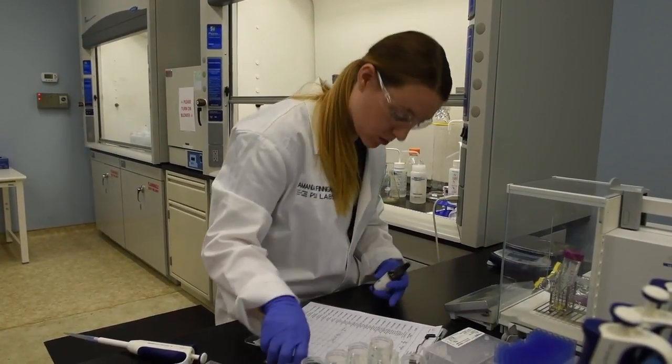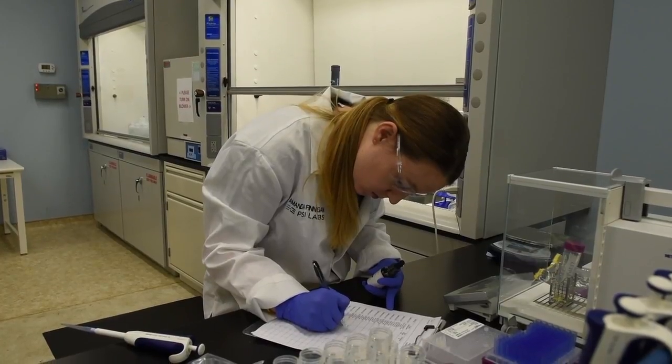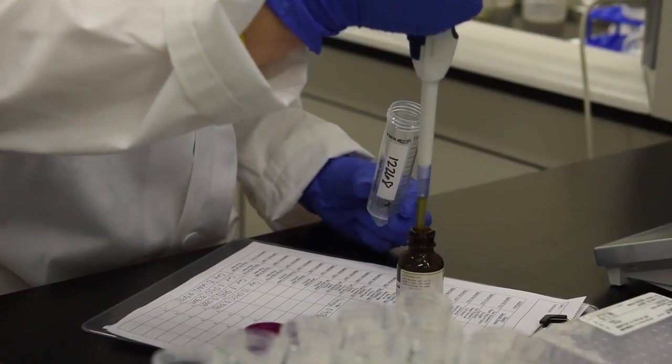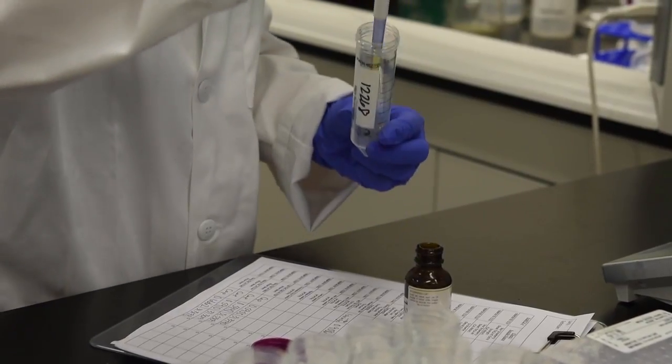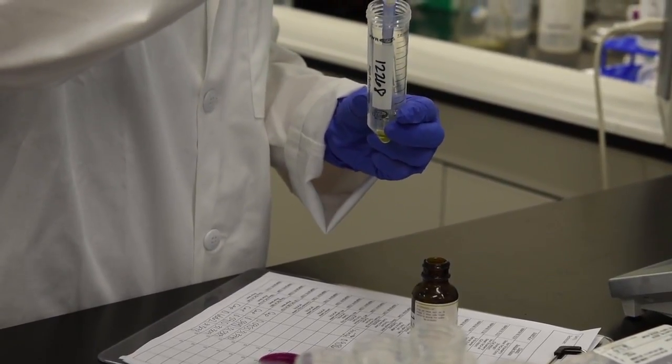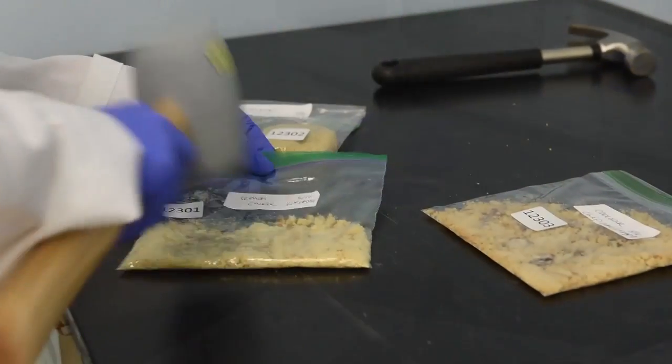This process involves what I like to call chemical accounting, where you're keeping track of every component of how much the edible weighed to begin with, making sure you get a homogeneous sample to subsample and get an accurate read on just how much is in there.